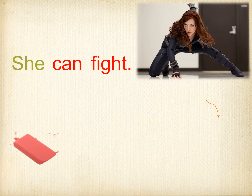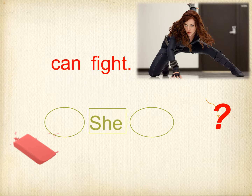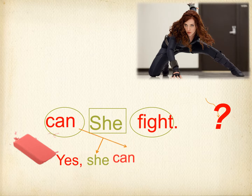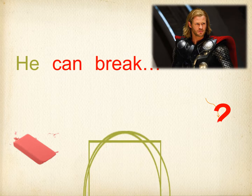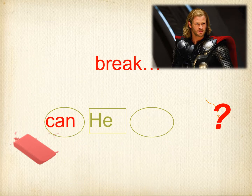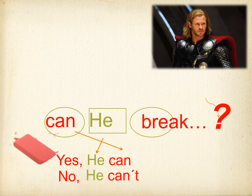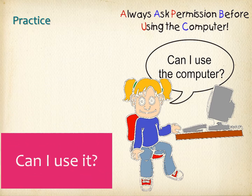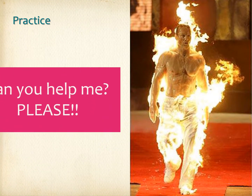One more example to fix the idea. She can fight. So we have to form the question — the subject goes in the middle. Can she fight? Yes, she can. Or no, she can't. More example: Can he break everything? Yes, definitely, he can. Or no, he can't. Some real-use examples — the child asking: Can I use the computer? Or: Can you give me something to eat? Can you help me, please?